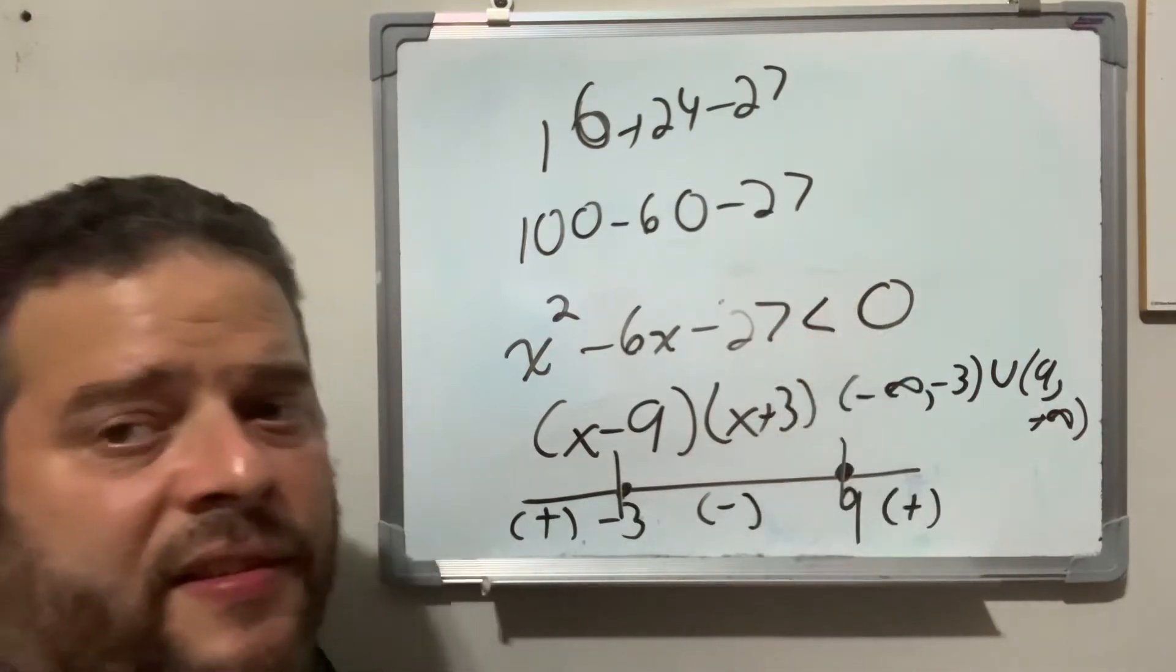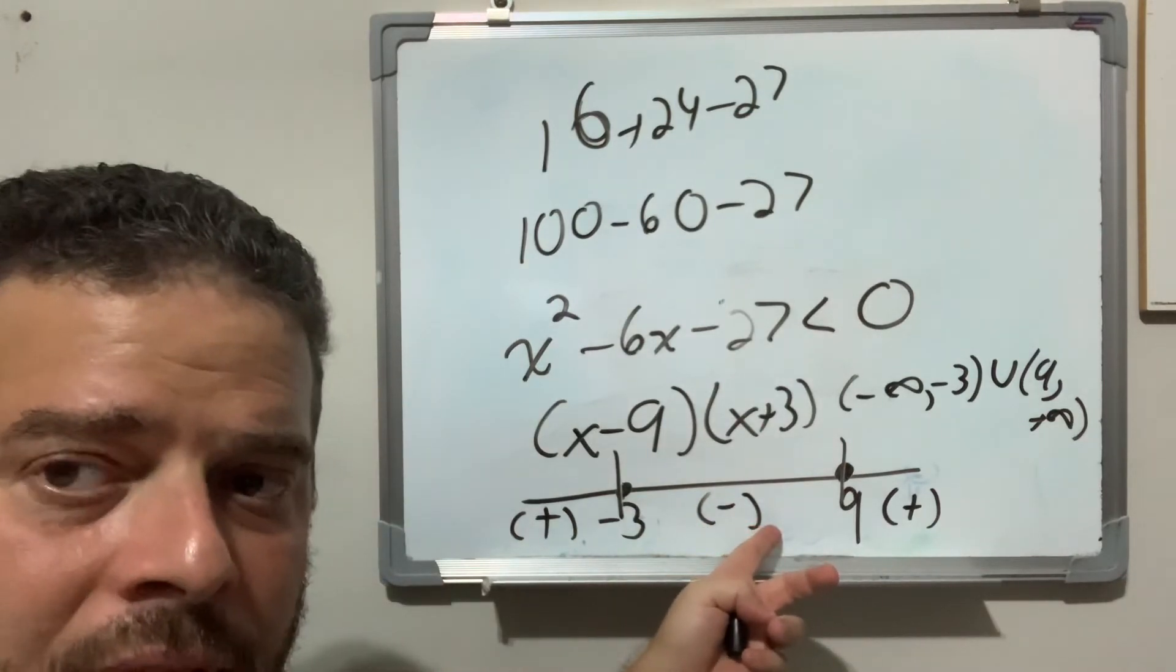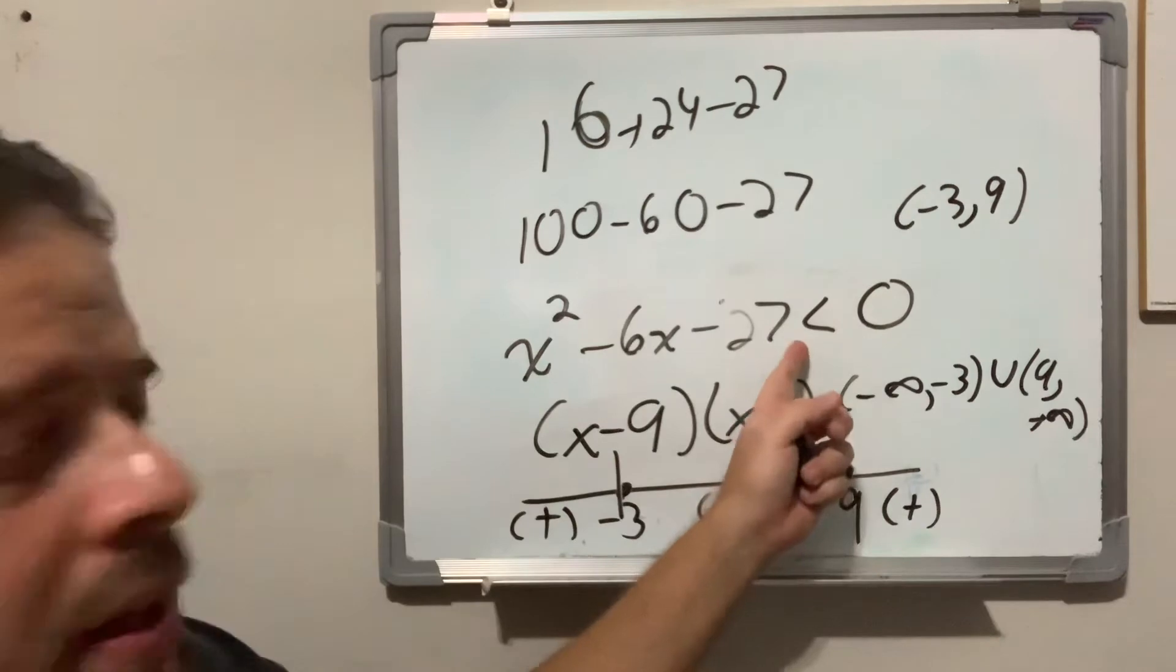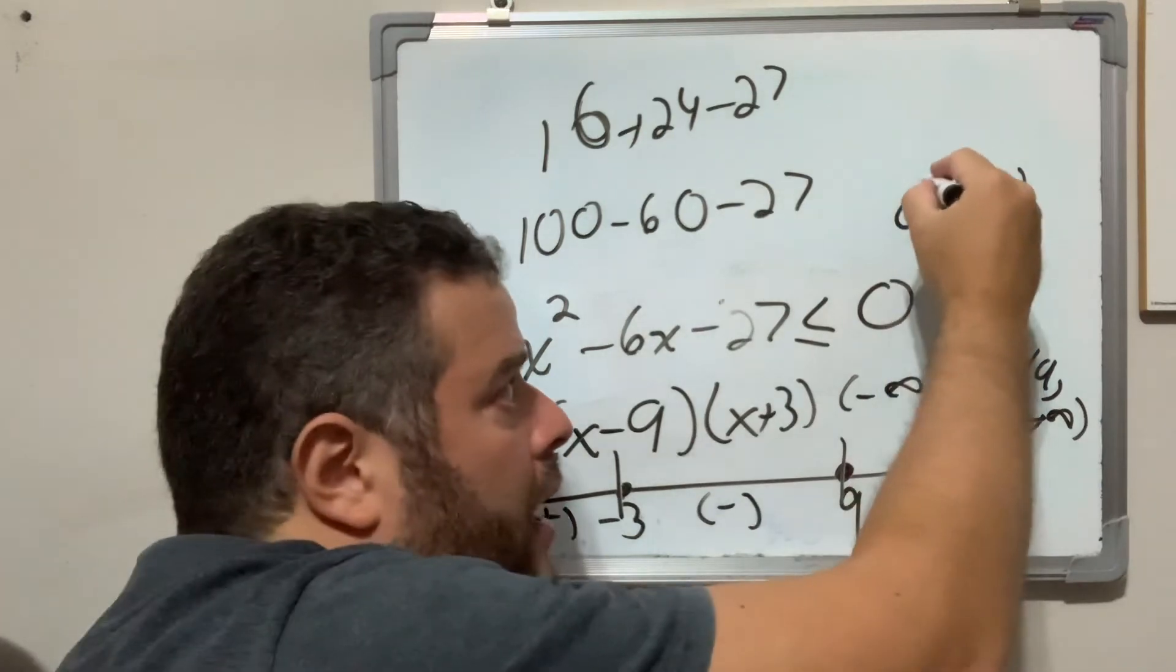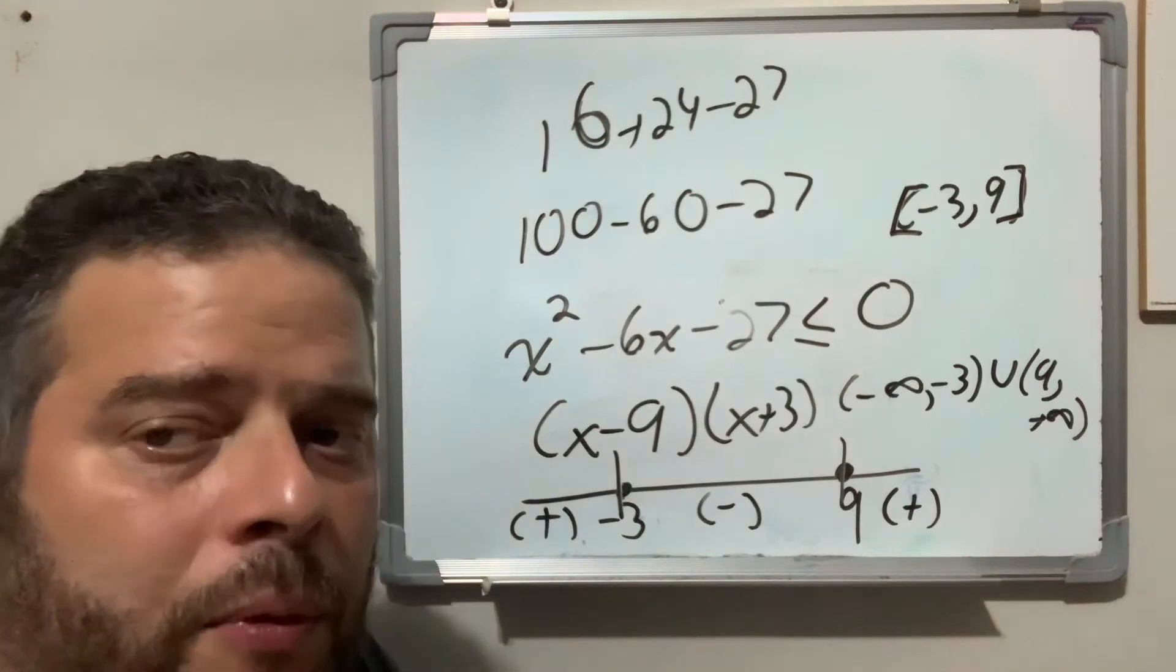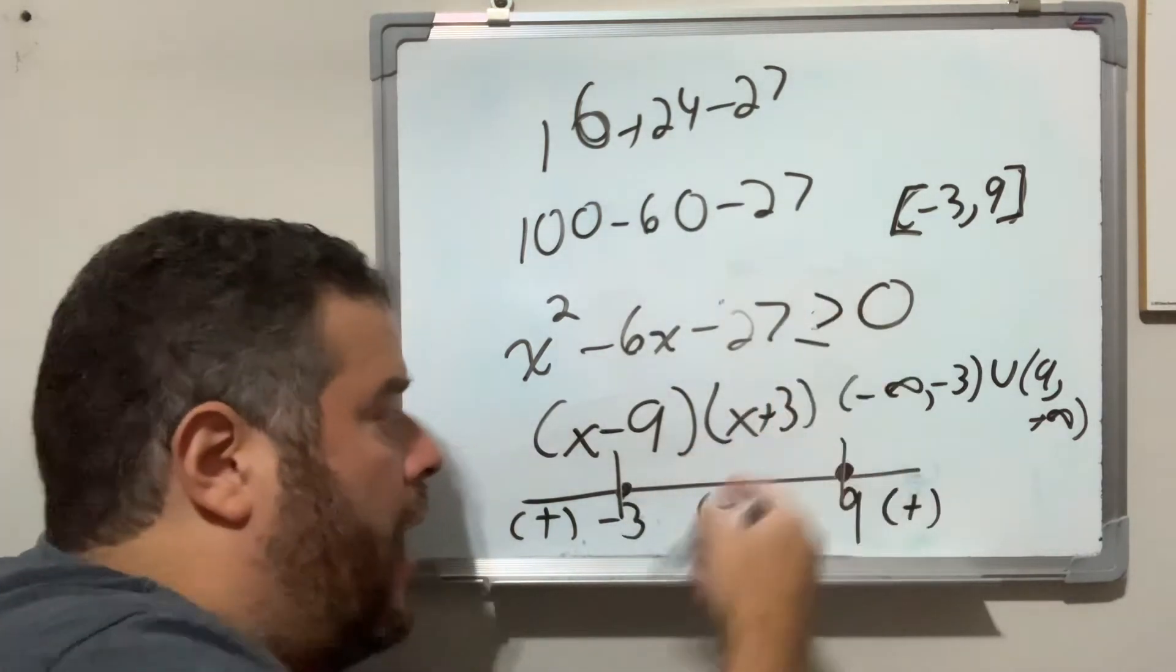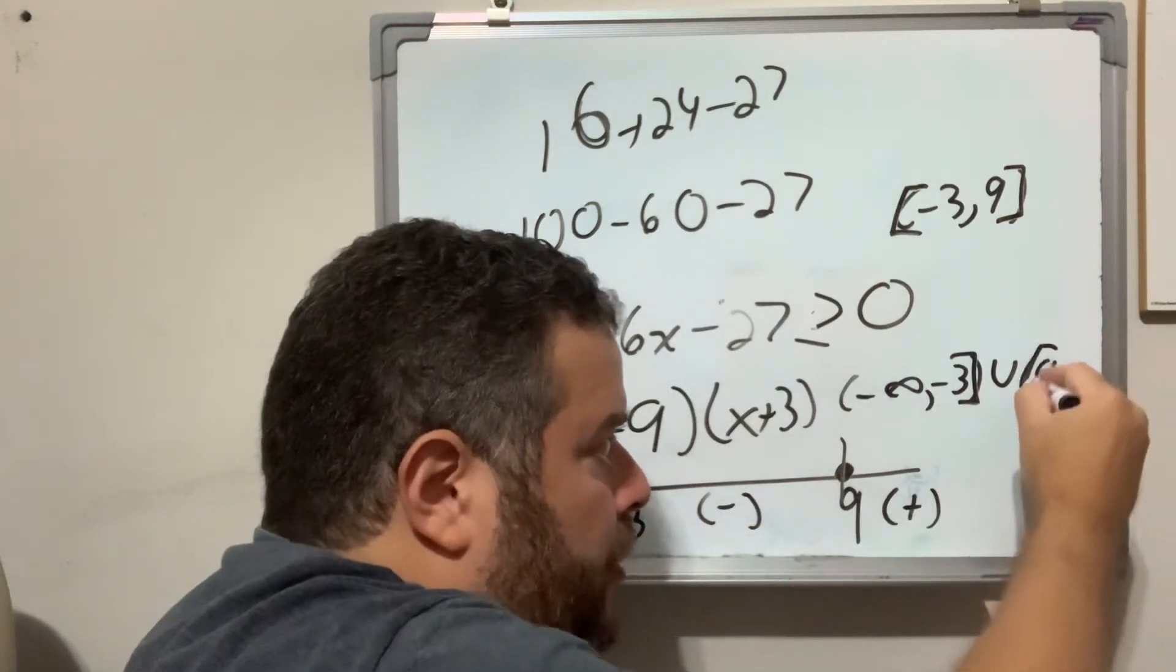If I were to just change the sign to less than zero, I would only pick the negative values, which are less than zero. So, the answer here would just be from negative 3 to 9, not including these values, because it's less than. If I were now to include that equal to, I would turn this into a bracket, or a key, because I would be including those values. And likewise, if this were greater than here, I would choose the positives, including these values, so I would just turn those into keys.